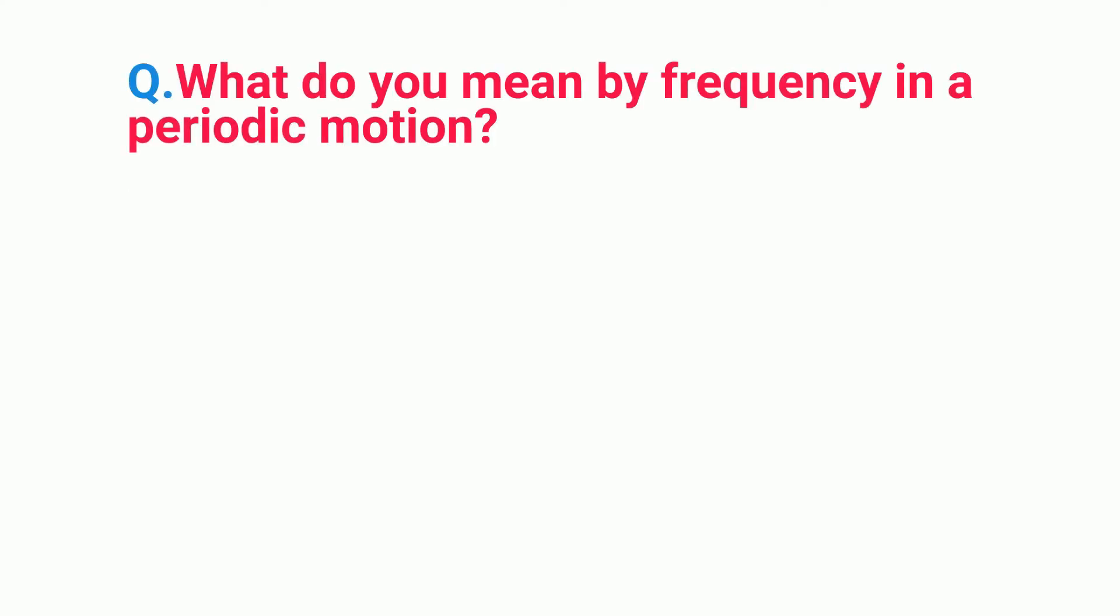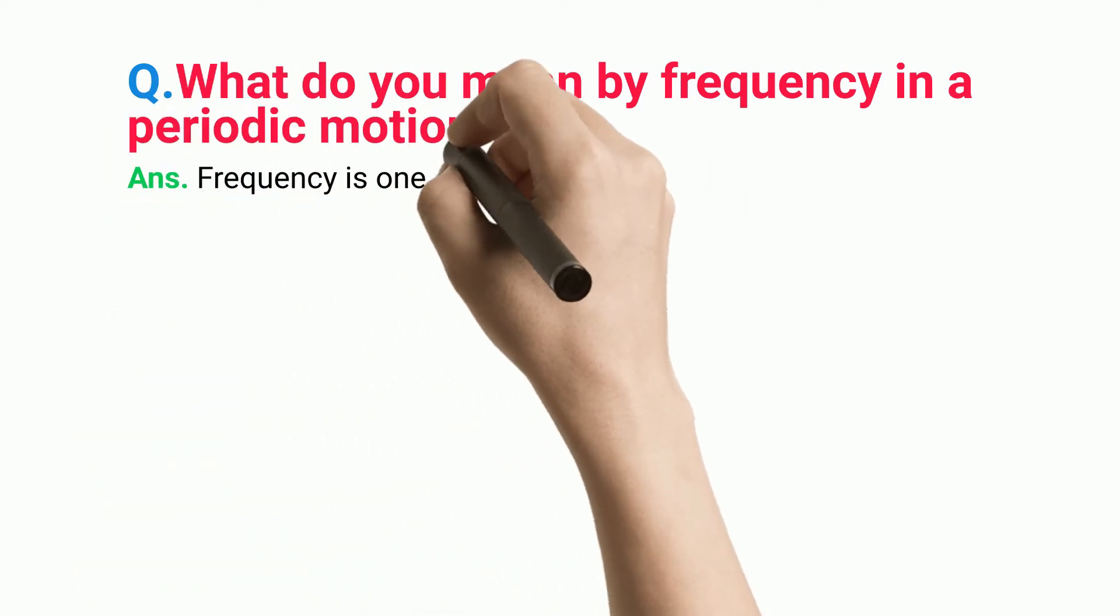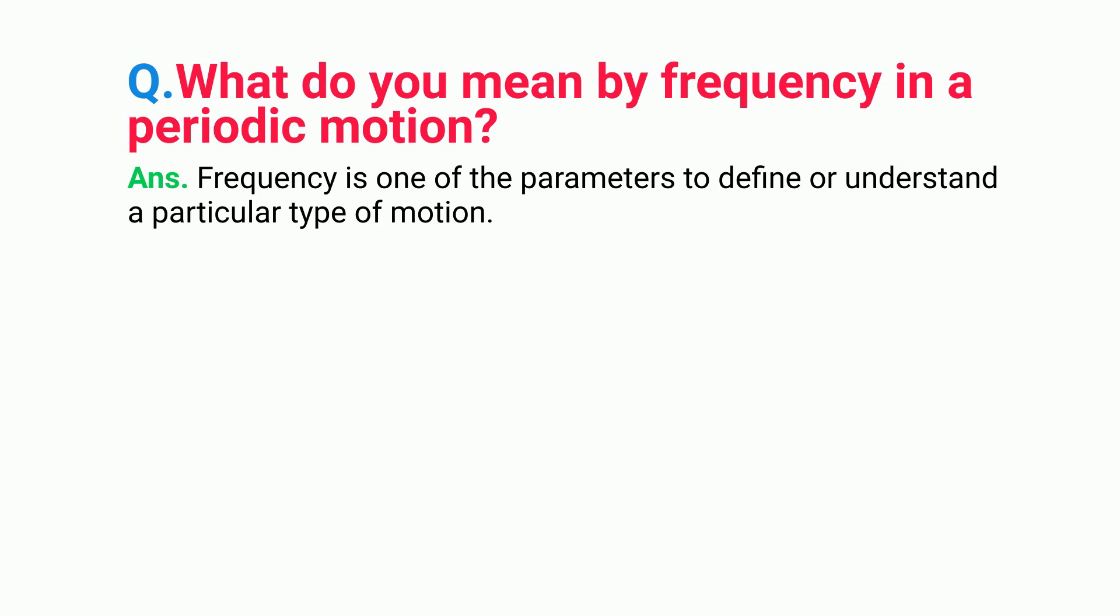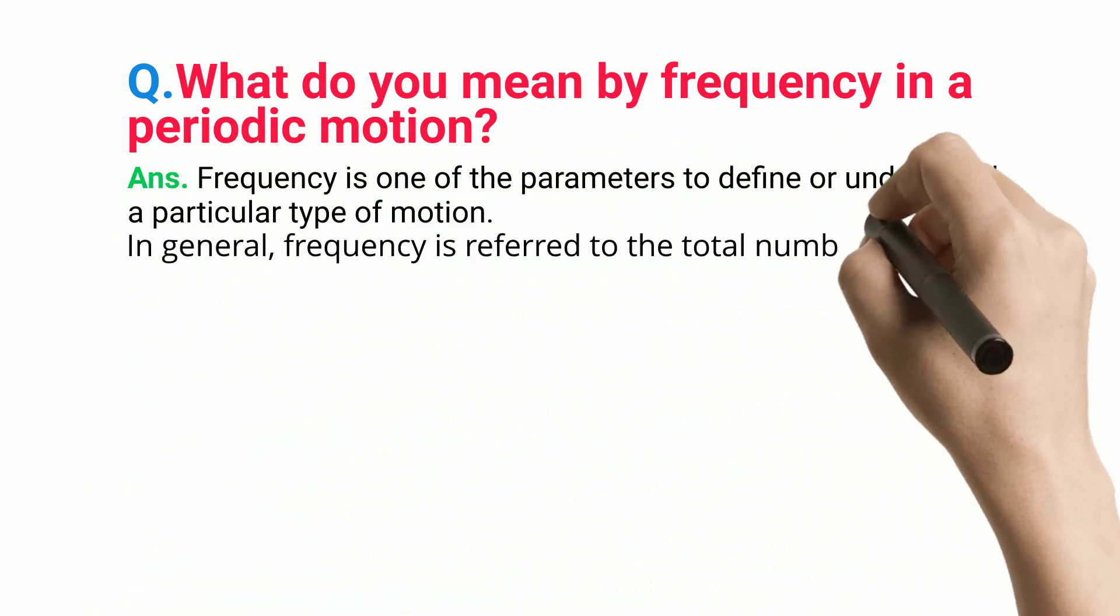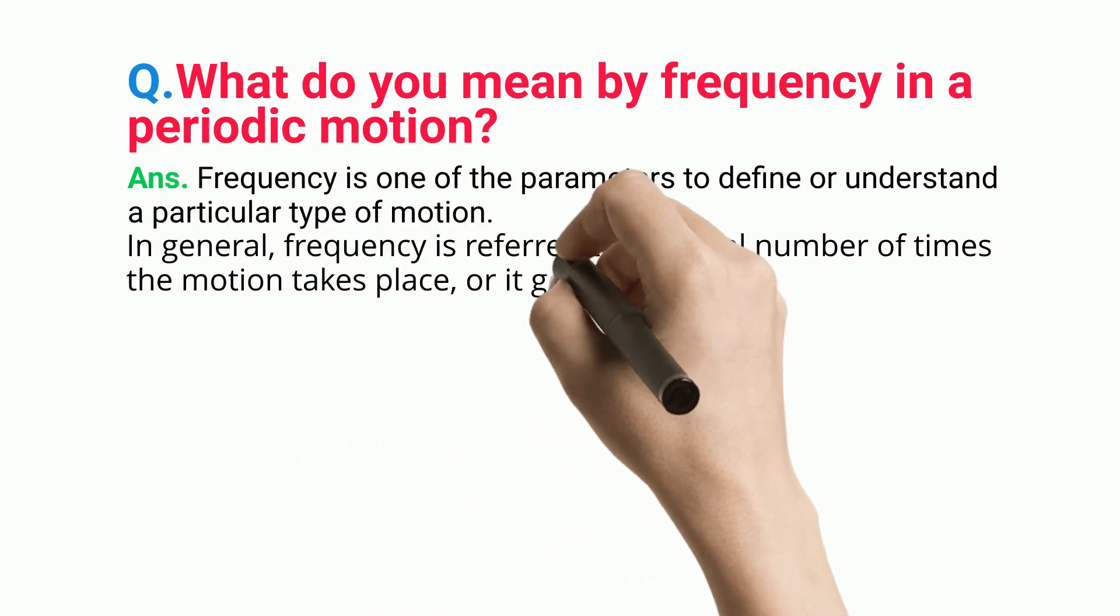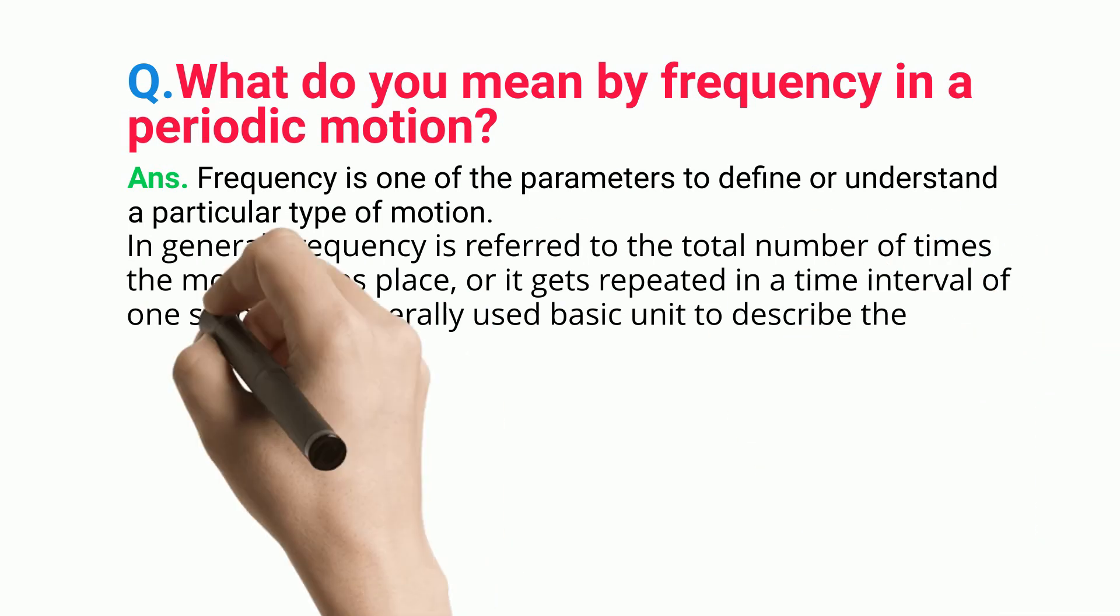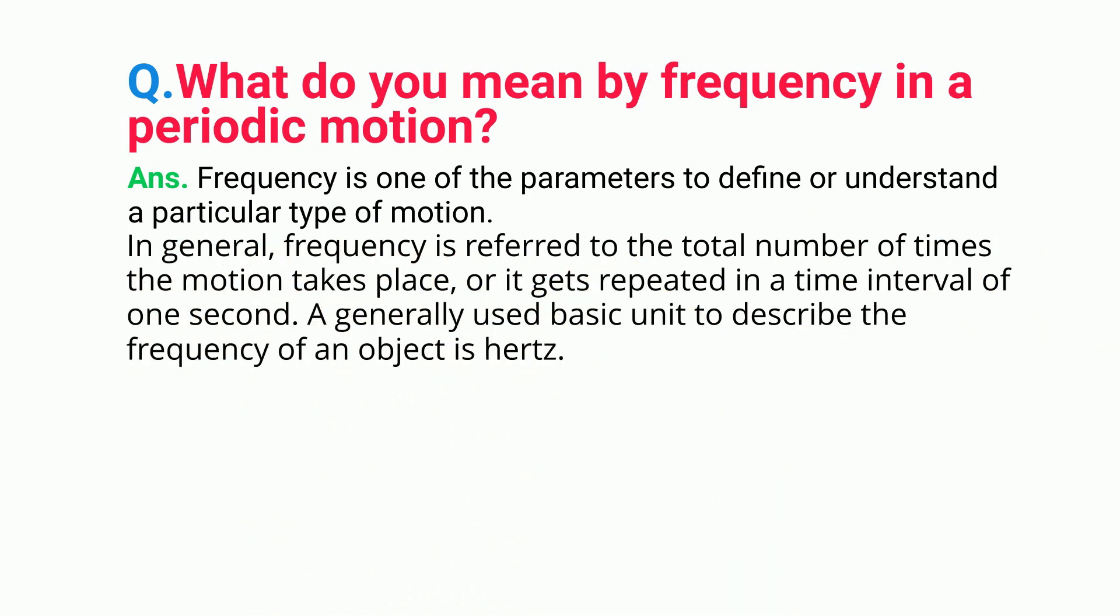What do you mean by frequency in a periodic motion? Frequency is one of the parameters to define or understand a particular type of motion. In general, frequency refers to the total number of times the motion takes place or gets repeated in a time interval of one second. A generally used basic unit to describe the frequency of an object is hertz.